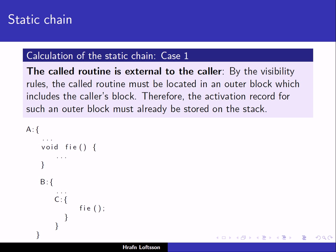There are really two cases to consider when calculating the static chain. The first: the called routine is external to the caller, meaning it is not declared inside the same block. For example, block A declares the function phi. Block B is nested inside A, and block C is nested inside B. Inside block C we call phi. Phi is external to the caller because it is not declared in the same block — it is a non-local reference.